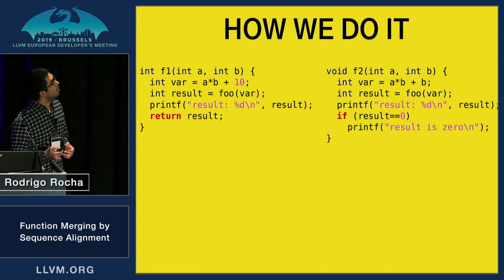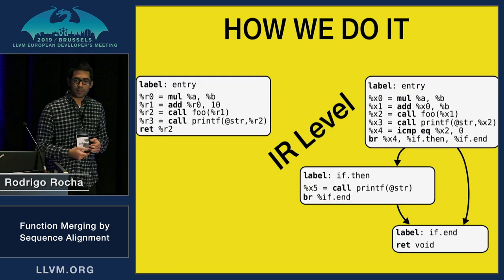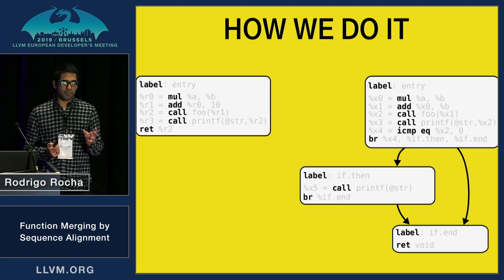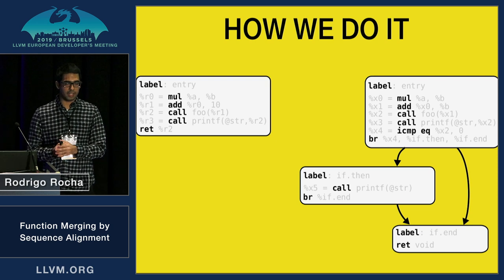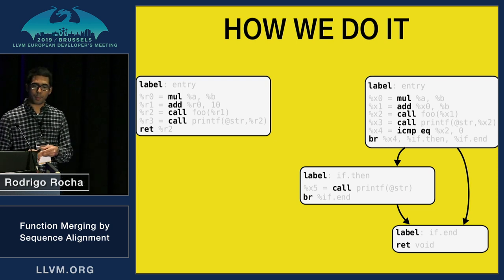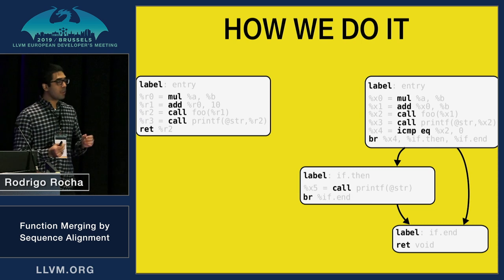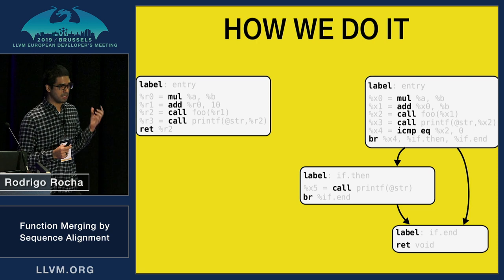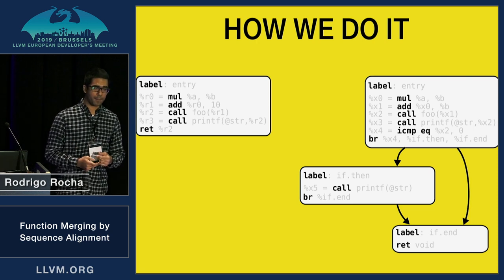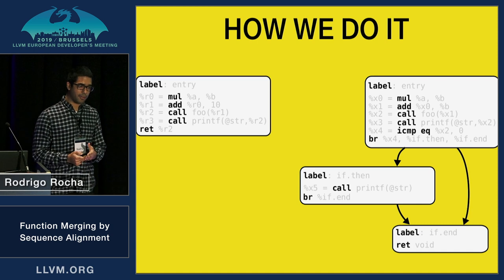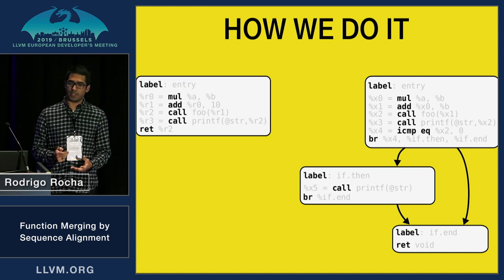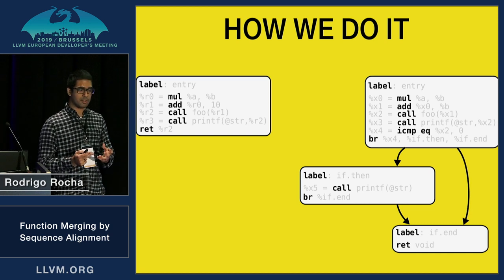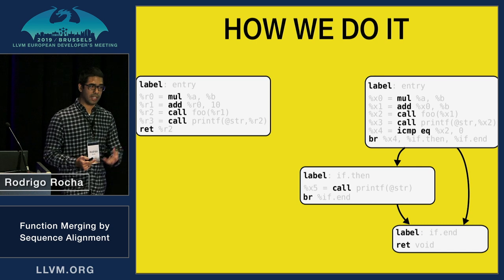So let's see how we do it using the same example, but now looking at the IR form. We don't need all the information at the moment, so we use this simplified version of our CFGs. What we want to do here is to do exactly the same transformation as we did manually, but do that automatically. Our first step is to linearize these CFGs to have a representation similar to how we humans look at source code in a textual format.